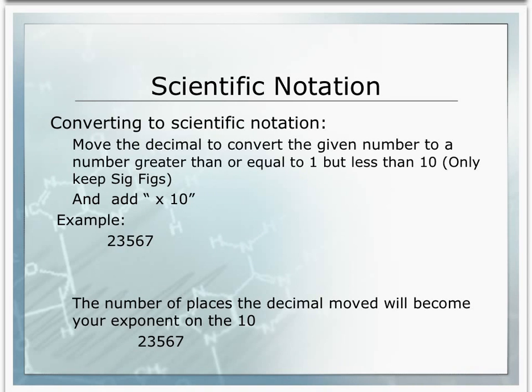How do we convert a number into scientific notation? The first thing we need to do is move the decimal to convert the given number to a number greater than or equal to 1 but less than 10. When doing this, we only want to keep our sig figs. We want to get rid of any placekeeping zeros and only keep the digits that are significant, and then we're going to add a times 10.